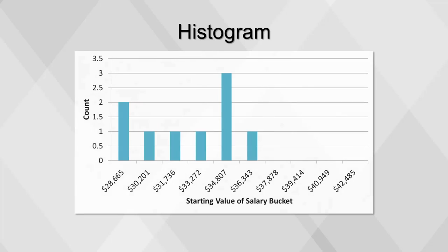Finally, we'll make a simple bar chart to visualize this table. This bar chart is known as a histogram, and it's one of the most common methods of visualizing a numeric distribution. Although many software packages can produce a histogram very quickly, as we've seen, creating one involves quite a few steps.